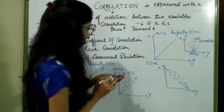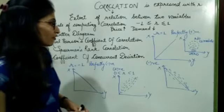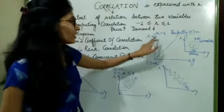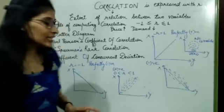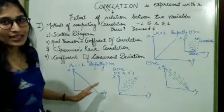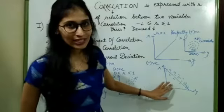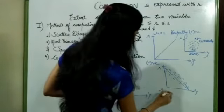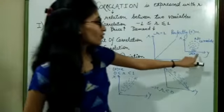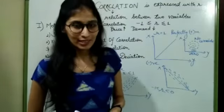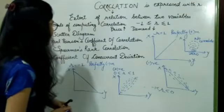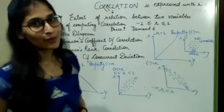So these are my five scatter diagrams: first for perfectly positive where R equals 1; second for perfectly negative where R equals minus 1; next for positive correlation where R ranges from 0 to 1; next for negative correlation where R ranges from minus 1 to 0; and the last for zero or no correlation. This is how scatter diagrams look for the different types of correlations.